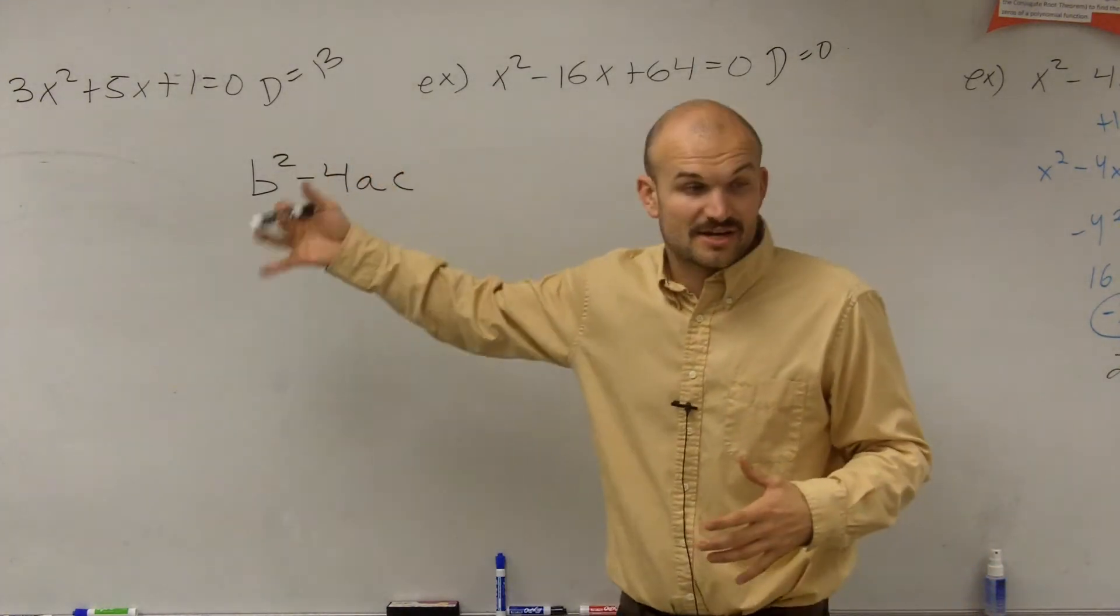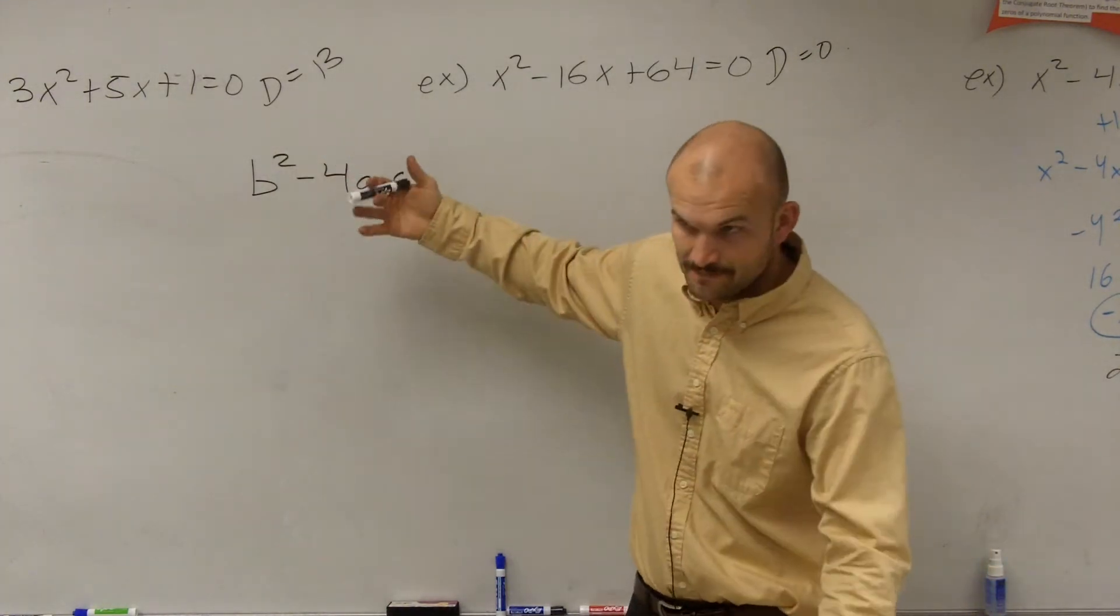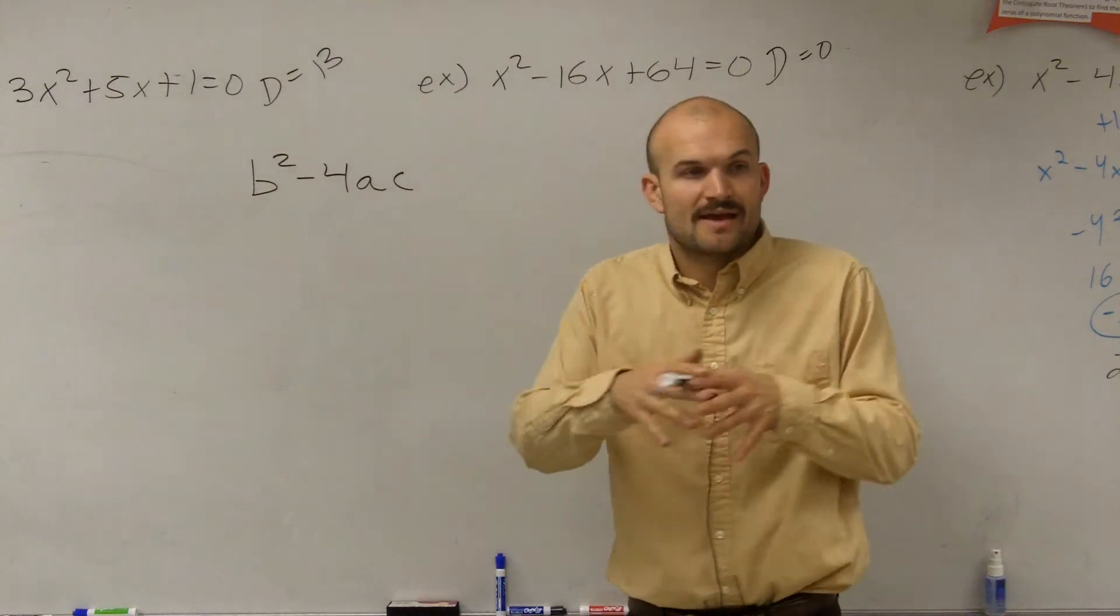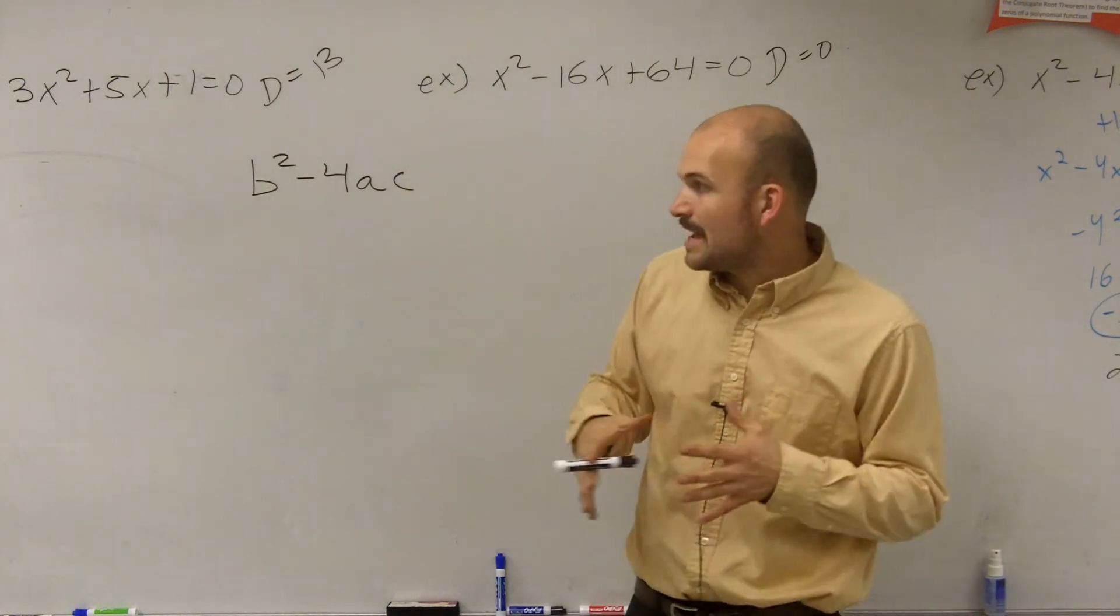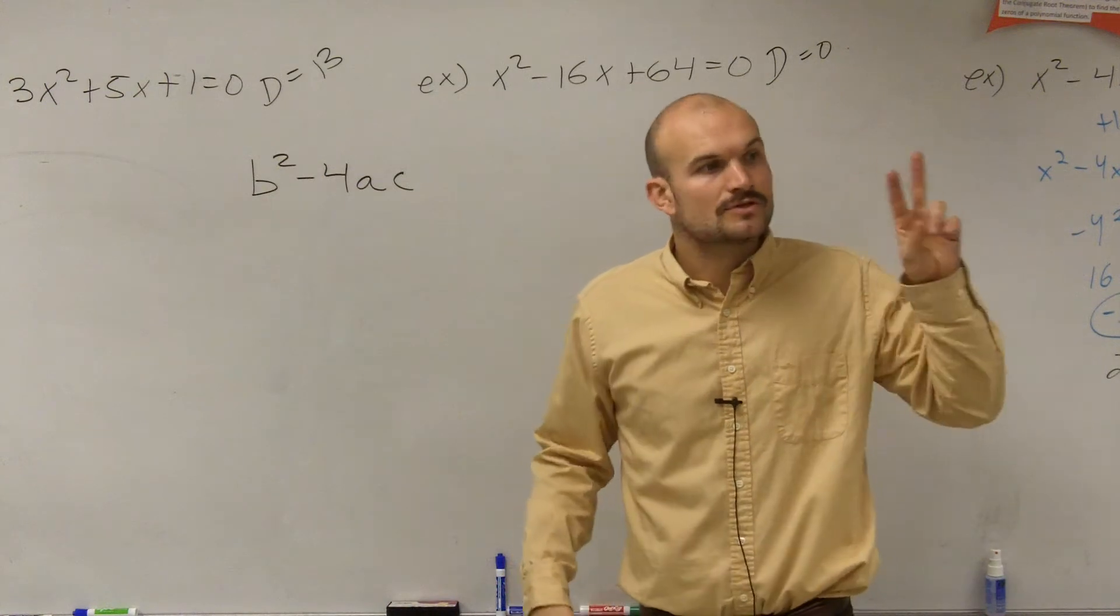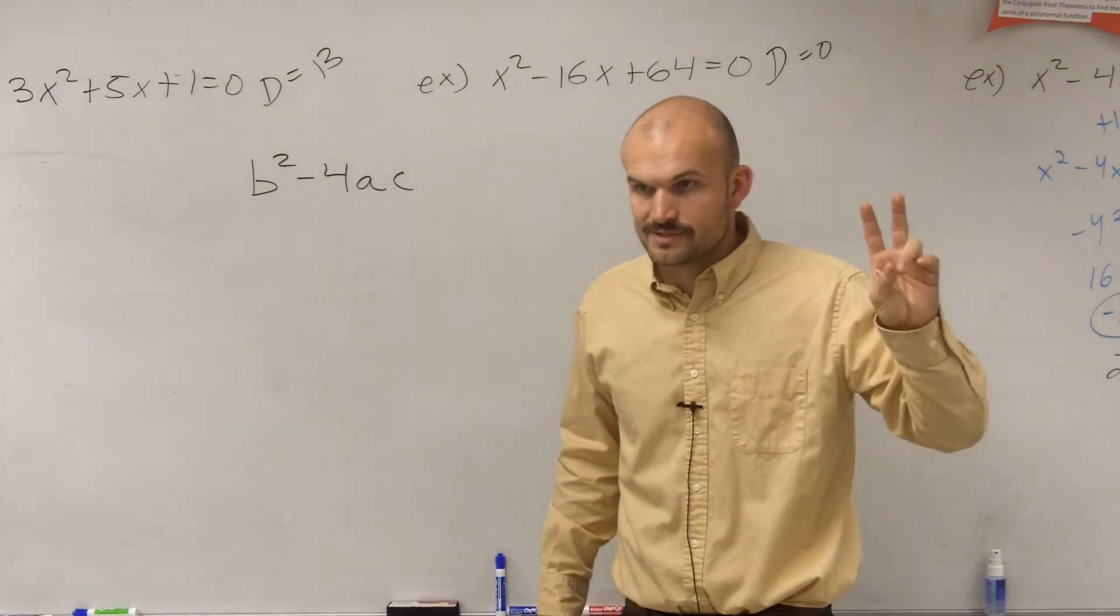Once you find your values for a, b, and c, you plug them in. We found out that if we have a positive number that is a square number, we have two real rational roots.